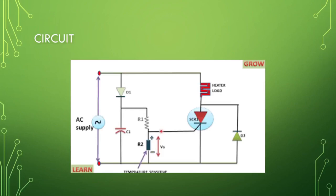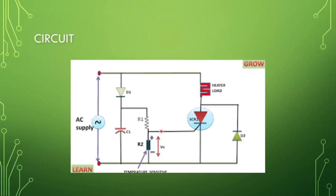Diode D1 conducts in the positive half cycle of the alternating current, and diode D2 works in the negative half cycle of the alternating current. R1 behaves as a constant current source and C1 will store charge. In this way, the circuit works.